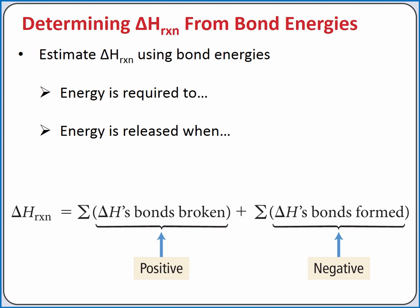So we can sum the energy required to break the bonds of our reactants, which is a positive delta H, and subtract the sum of the energy when the bonds of our products are formed, since forming bonds is a negative change in enthalpy.